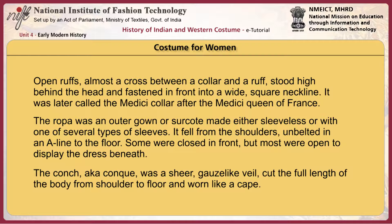The ropa was an outer gown or surcoat, made either sleeveless or with one of several types of sleeves. It fell from the shoulders, unbelted, in an A-line to the floor. Some were closed in front, but most were open to display the dress beneath. The conch, also known as concha, was a sheer, gauze-like veil cut the full length of the body from shoulder to floor and worn like a cape.